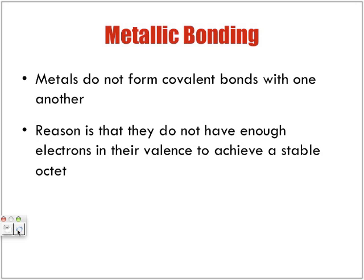So, metallic bonding. Metals do not form covalent bonds with one another. Reason is that they do not have enough electrons in their valence to achieve a stable octet.